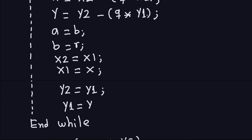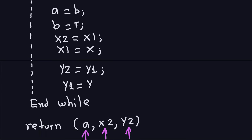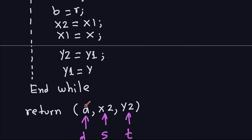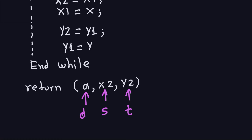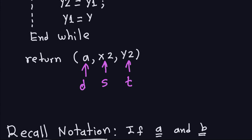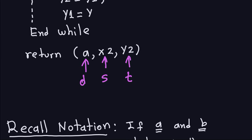Once the loop finishes, the answer is whatever is in variable A — that's the greatest common divisor. Whatever is in X2 is the coefficient S, and Y2 is the value of T. You can double-check correctness by verifying that GCD equals S times A plus T times B. That's the algorithm for computing the GCD and the Bezout coefficients. That's all about the extended Euclidean algorithm — now we're moving into a new topic.